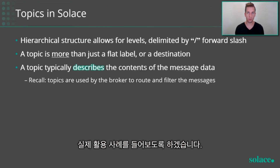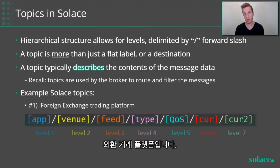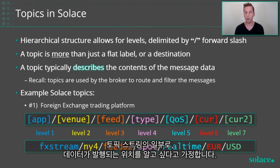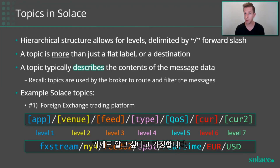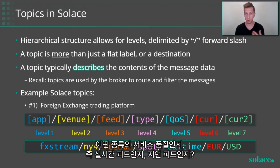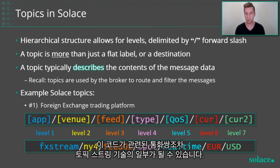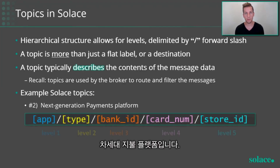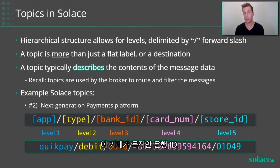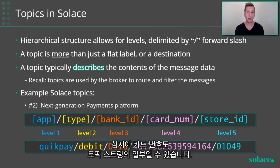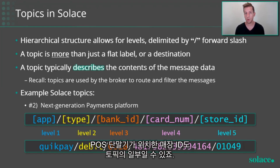Let's take a look at some real world use cases. For a foreign exchange trading platform, you might want the location the data is published from, the specific feed handler, what type of quote it is, the quality of service — real-time or delayed feed — and even the currency pairs the quote relates to, all as part of the topic string. For a next generation payments platform, you'd have credits and debits, the bank ID the transaction is destined for, even the card number, and the store ID where the point of sale terminal is located — all as part of the topic.